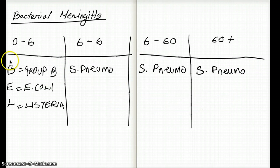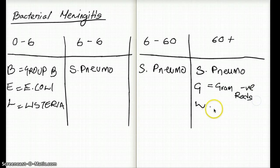This is BEL. For the 60 years plus group, you can remember this as SGL. The G would be gram-negative rods, and L is Listeria.